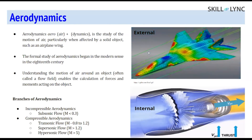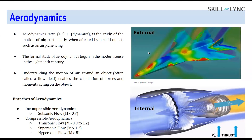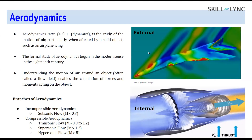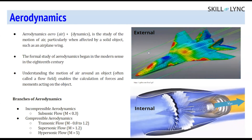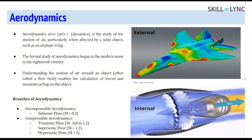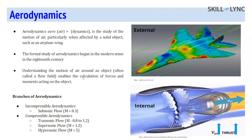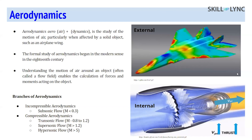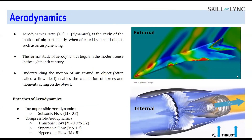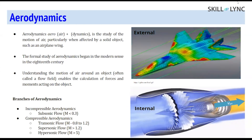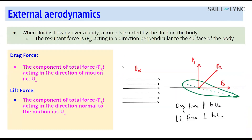There are branches of aerodynamics - incompressible and compressible - classified depending on Mach number. If Mach number is from 0.8 to 1.2 we call it transonic flow; more than 1.2 to 1.3 is supersonic; and greater than 5 is hypersonic. Just as we classify laminar and turbulent based on Reynolds number, we also classify flow based on Mach number.